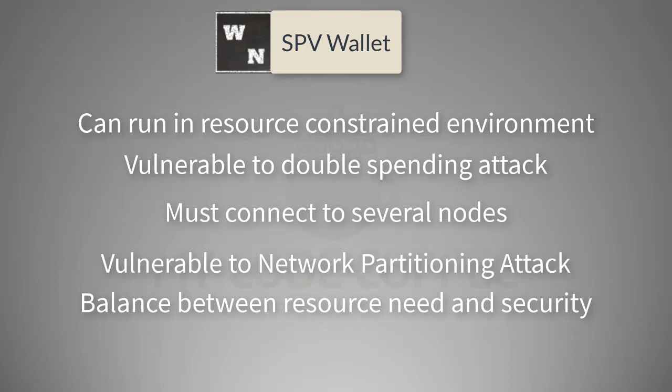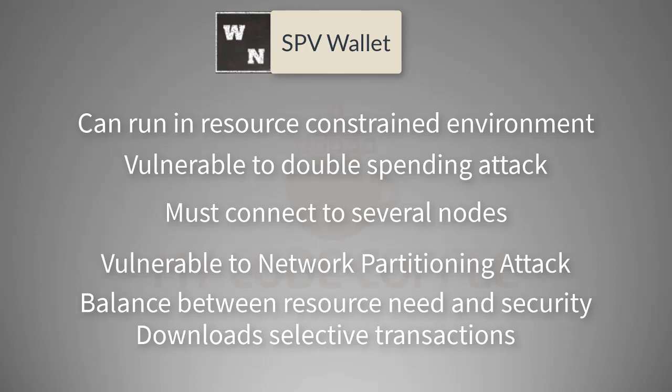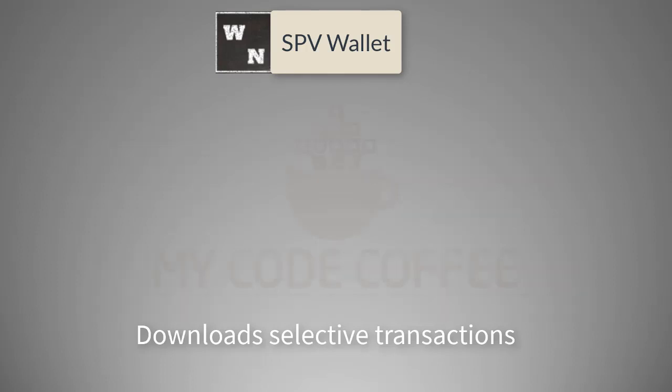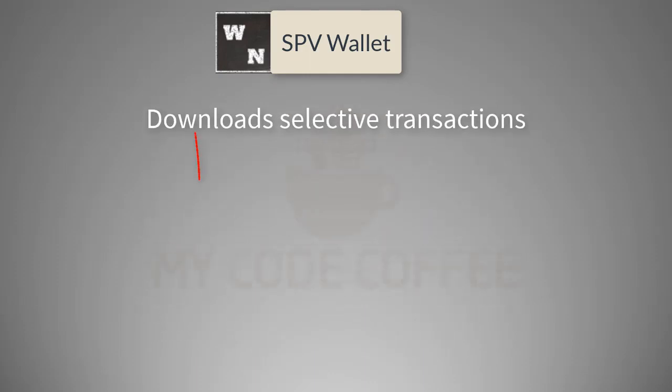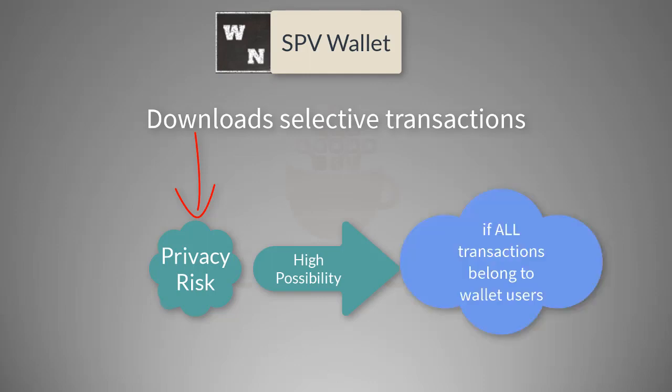SPV nodes download selective transactions because they are interested in only those transactions which belong to the users of its wallet. However, this approach can lead to a privacy risk, because if all transactions belong to wallet users, a third party monitoring the transactions can associate a Bitcoin address with the user of that wallet. The possibility is high if there is a guarantee that all the transactions downloaded by this wallet belong to the users of the wallet only. To avoid this type of risk, SPV nodes use a feature called bloom filters.